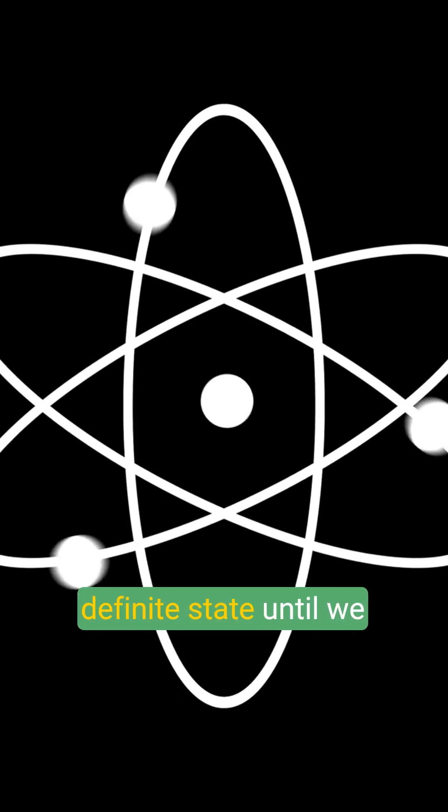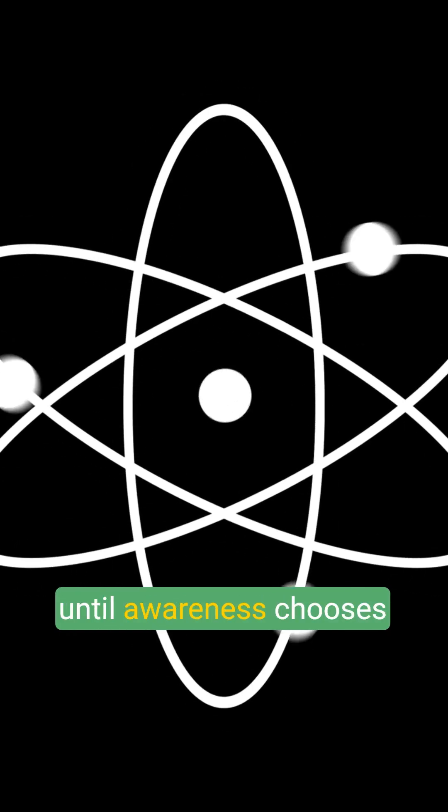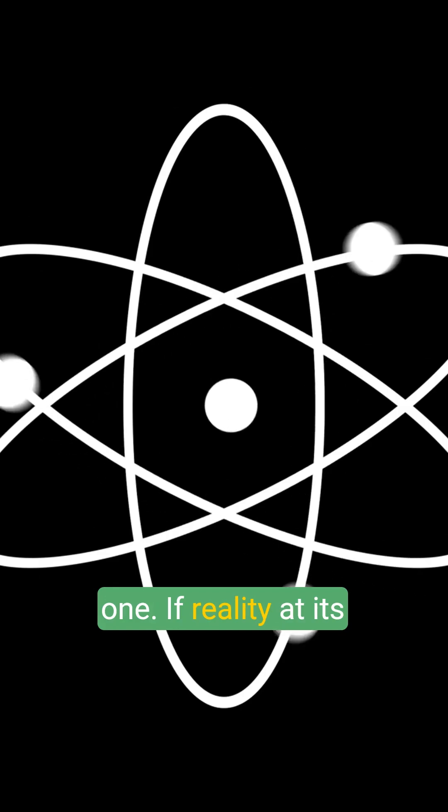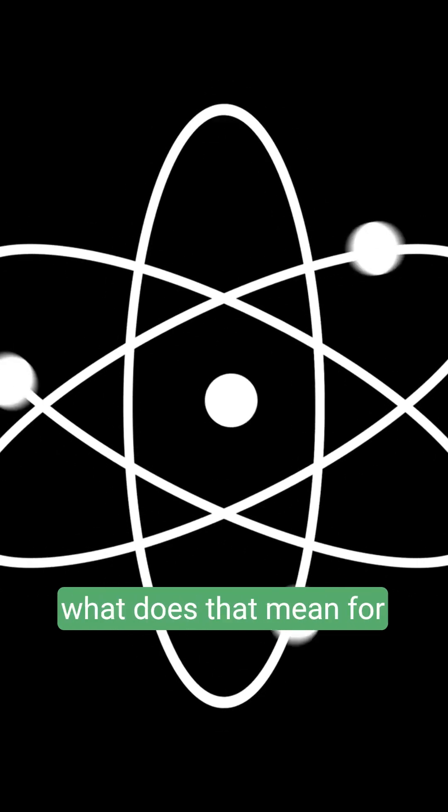Particles do not have a definite state until we observe them. They exist in all possibilities until awareness chooses one. If reality at its smallest level changes when looked at, then what does that mean for everything else?